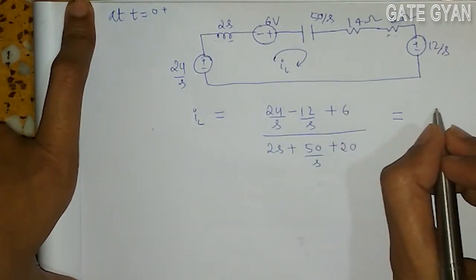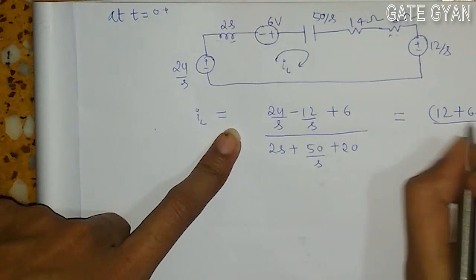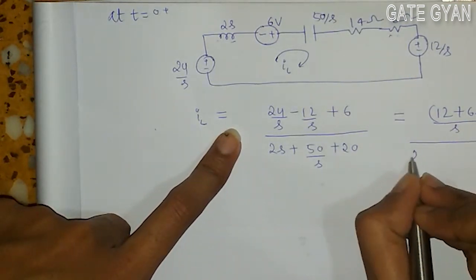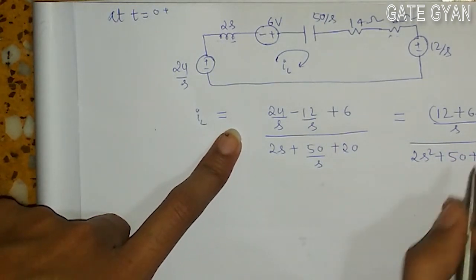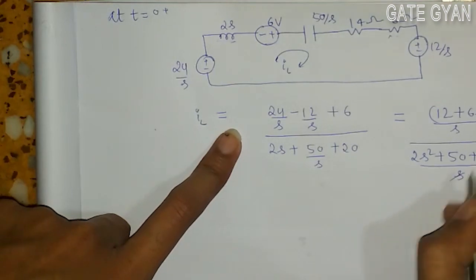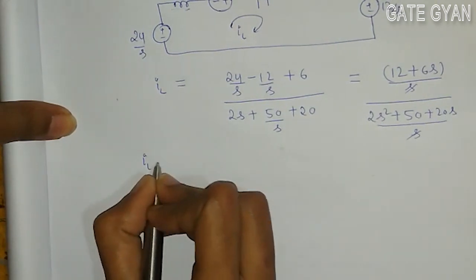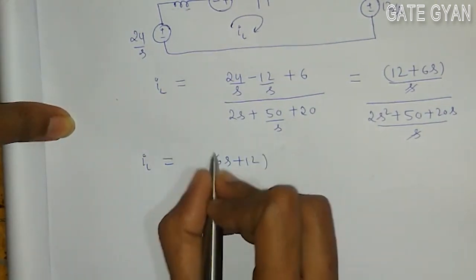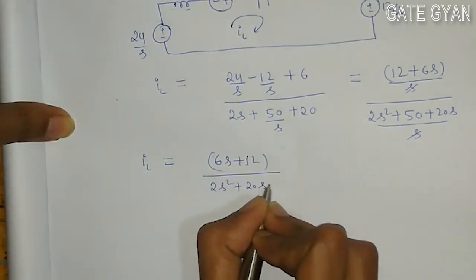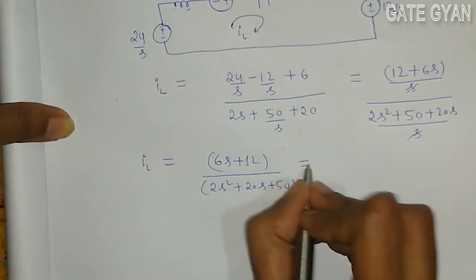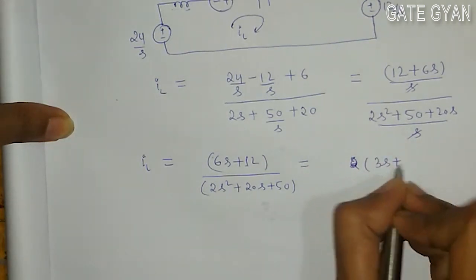The expression of IL will become: IL equals 24 by S minus 12 by S plus 6, divided by 2S plus 50 by S plus 20. On simplification, this becomes 12 plus 6 by S in the numerator, and 2S squared plus 20S plus 50 in the denominator, with the S cancelling. So IL equals (6S plus 12) divided by (2S squared plus 20S plus 50). Taking 2 common from the denominator, it becomes 3S plus 6 over S squared plus 10S plus 25.